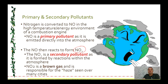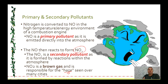Nitrogen dioxide is brown and is responsible for the haze you see over many cities. It's a very clear indicator that you've got the conversion of nitrogen into nitrogen monoxide occurring in car engines, and then the further reaction in the atmosphere in the presence of sunlight.